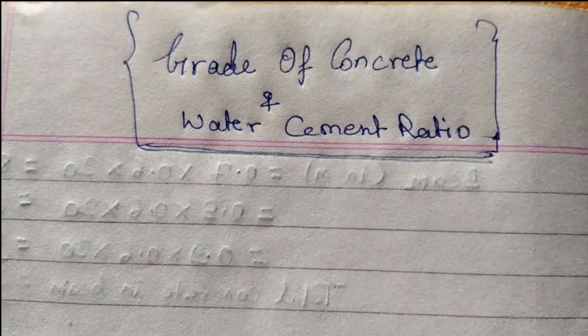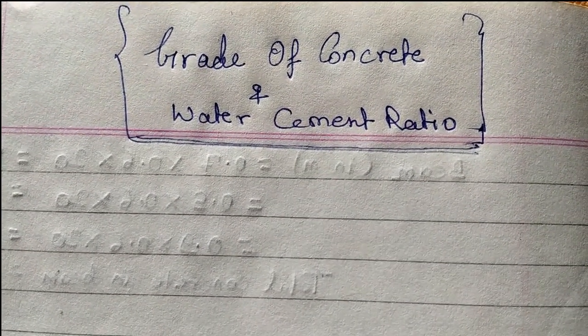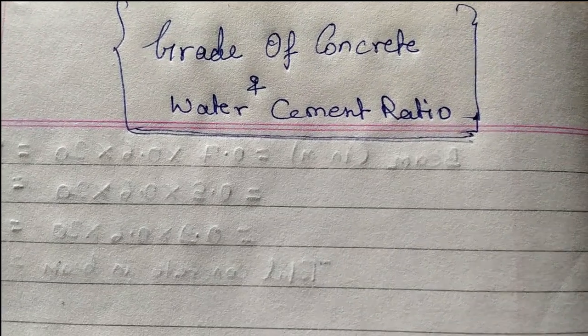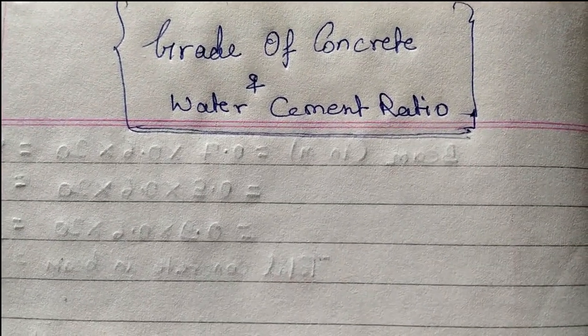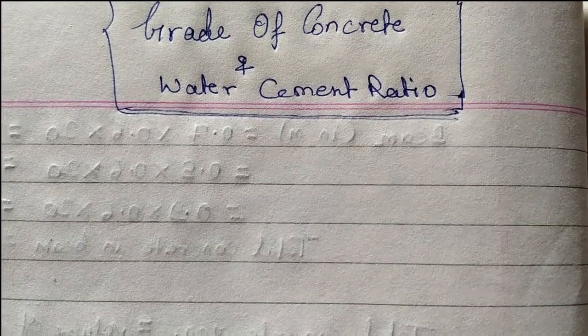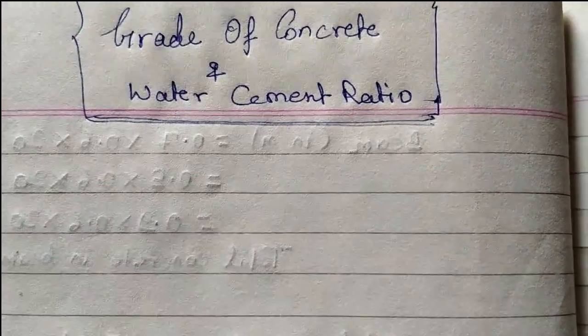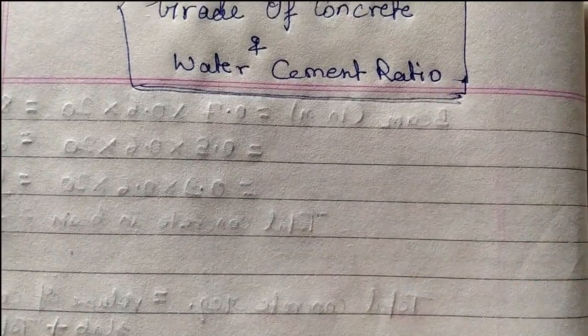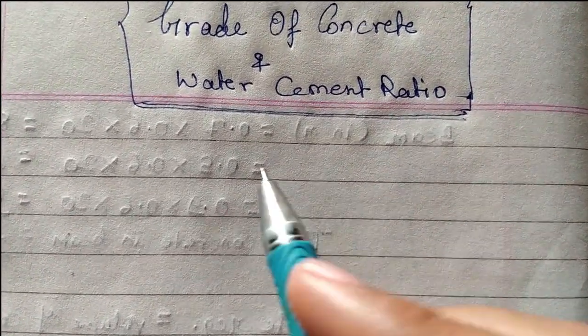Friends, firstly we know what is grade of concrete. Grade of concrete is a type of concrete which is used for different structures. We all know that every structure has a different grade of concrete. It is a type of concrete.